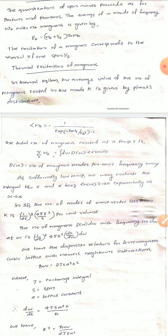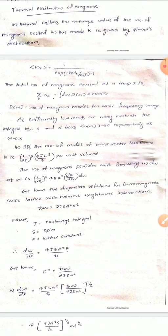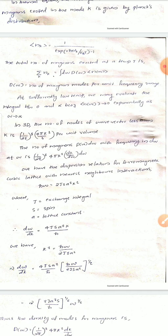At sufficiently low temperature, we may evaluate the integral from zero to infinity, because the average n(omega) tends to zero as omega tends to infinity. In the three-dimensional case, the number of magnons with wave vector less than k is given by (1/(2pi)^3) times (4pi k^3 / 3) per unit volume. The number of magnon modes D(omega) d-omega with frequency in range d-omega at omega is (1/(2pi)^3) times 4pi k^2 (dk/d-omega) d-omega.